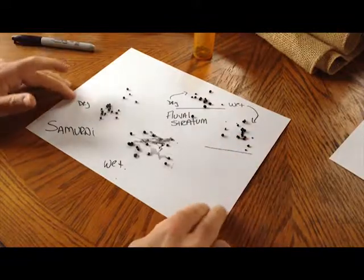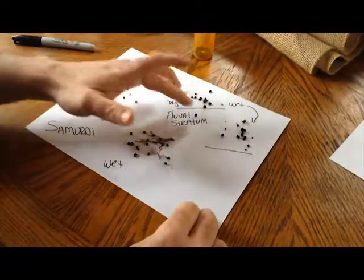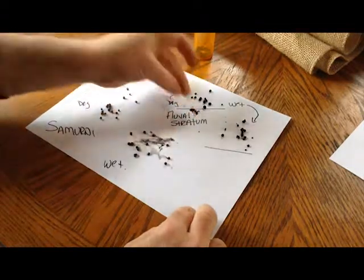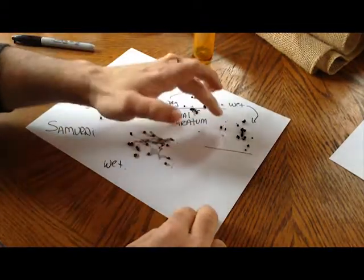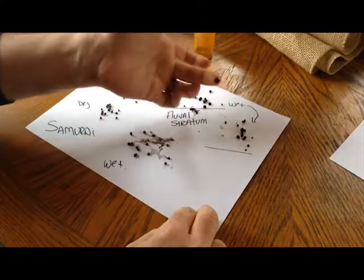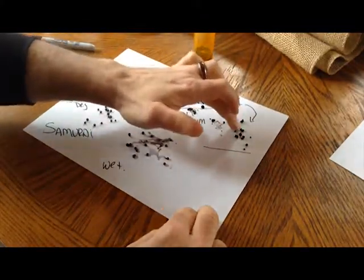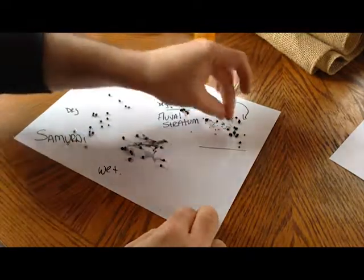As you can see with the Fluval Stratum, even in its dry form you can just gently take your finger and just crush it. In the wet form it tends to go down really quickly, it's a clay-like, very soft material.